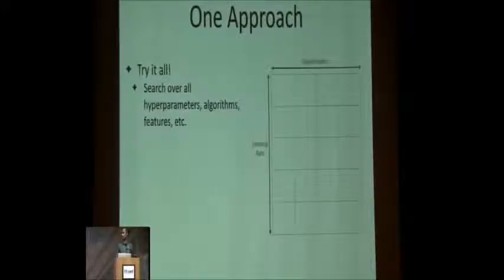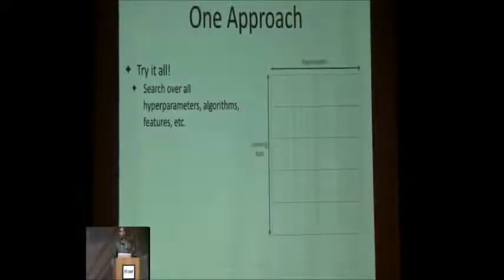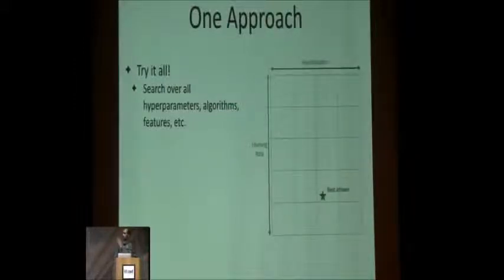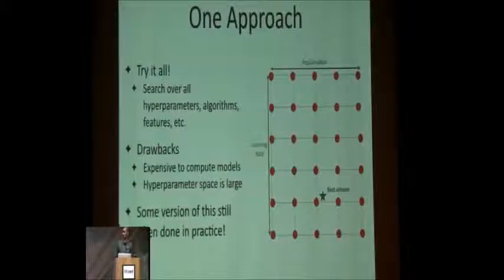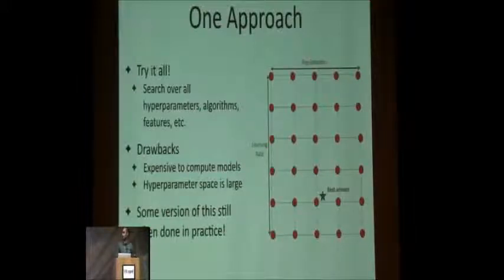The idea is you just try everything. Here's an example: imagine a two-dimensional hyperparameter space of learning rate and regularization. You grid up the space and try every point on that grid. Each dot corresponds to a trained model, and you train all of them one at a time, hoping one of the grid points will be pretty good. The problem, obviously, is that it's expensive to compute and train all these models, and the hyperparameter space can get very large. That said, it really is what people typically do in practice.